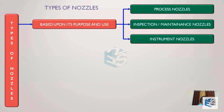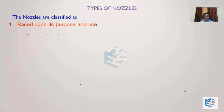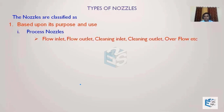We are going to see what falls under process nozzles, inspection nozzles, and instrument nozzles, and why these are different from one another — whether there is any difference as far as design is concerned. When we say process nozzle, we mean nozzles which carry the fluid from any other system bringing it inside that vessel, or carrying the fluid from that vessel to some other equipment or storage tank.